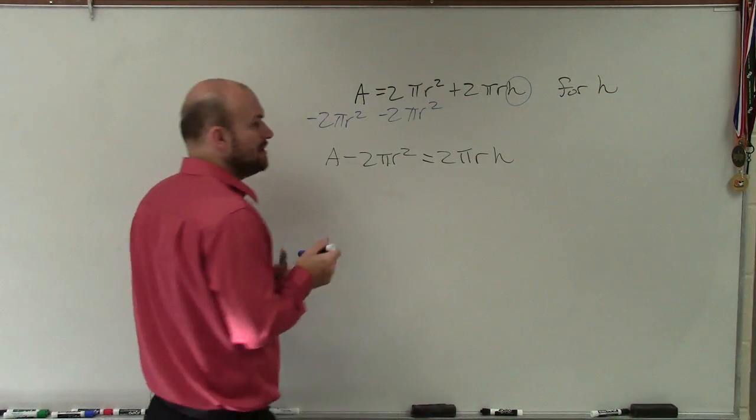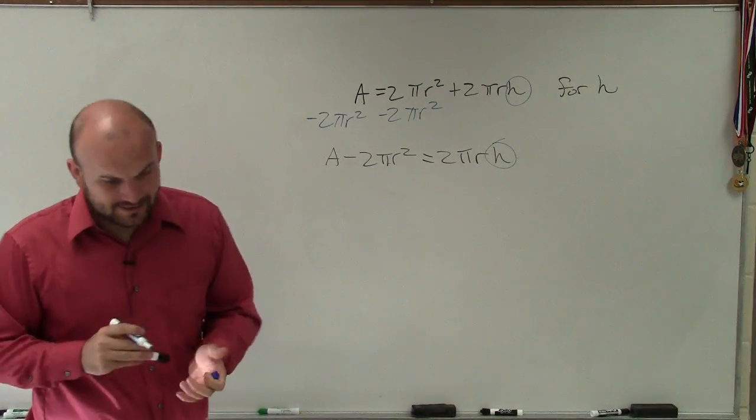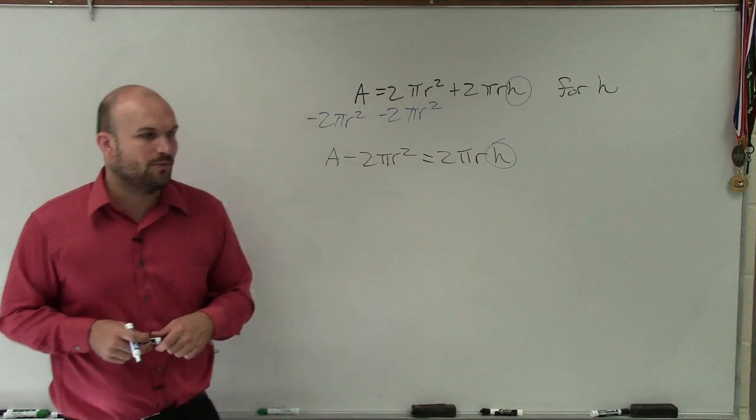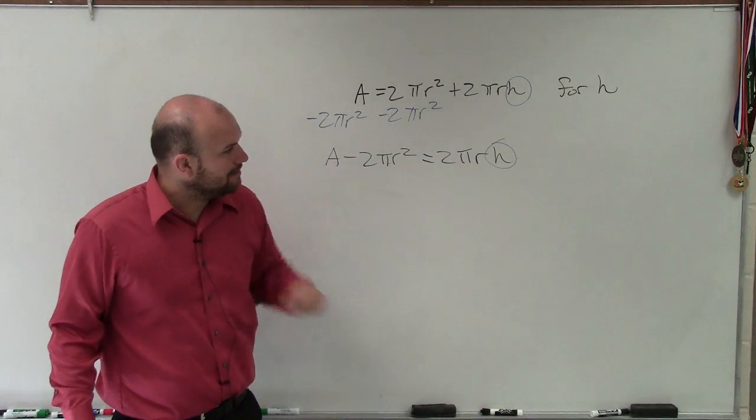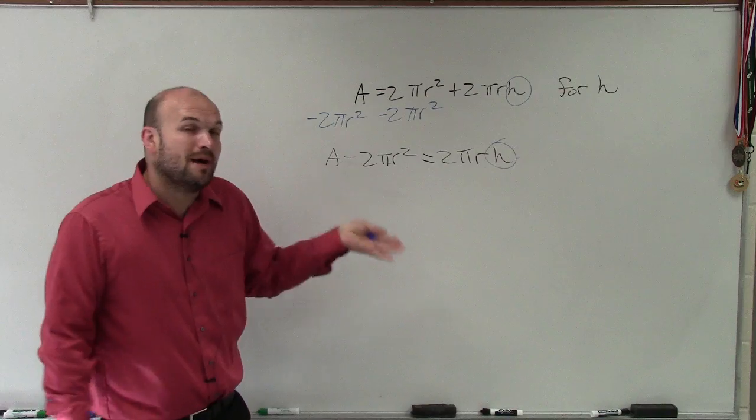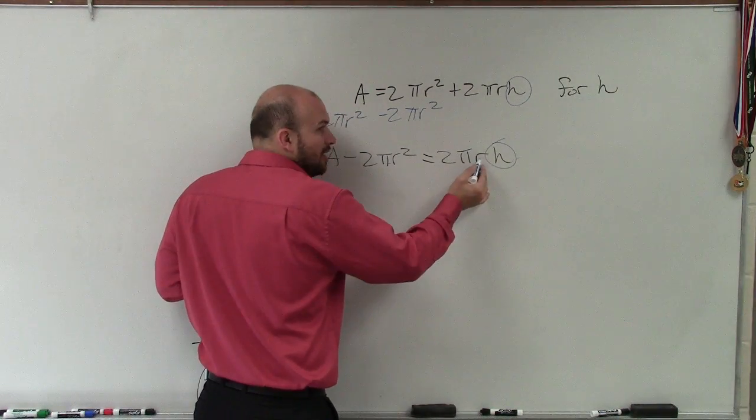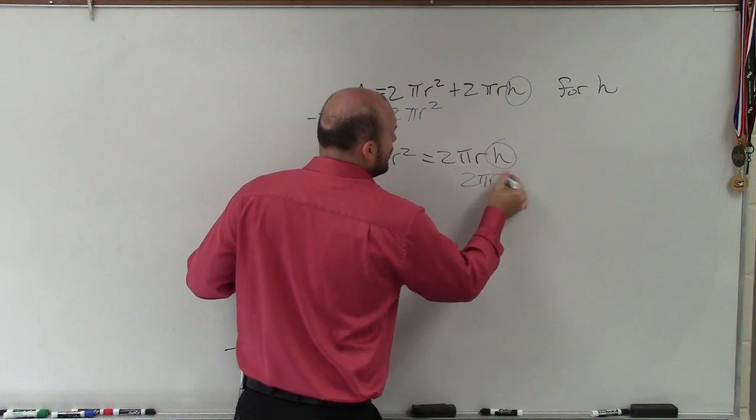So then again, I'll go back to this and circle and say, all right, what has happened to the h? It's 2πr, right? So I need to undo multiplying by 2πr. All three of these are multiplied by my h, so I need to divide by all three of them.